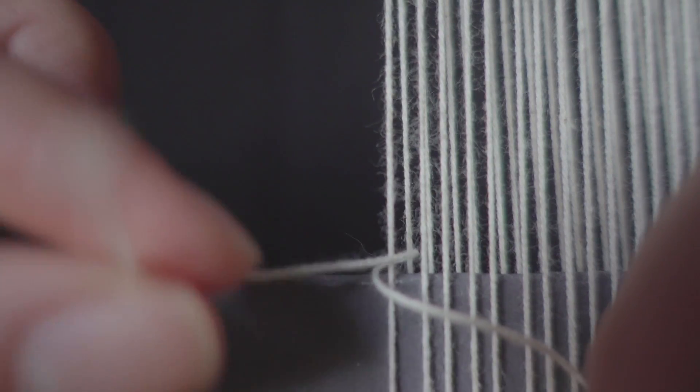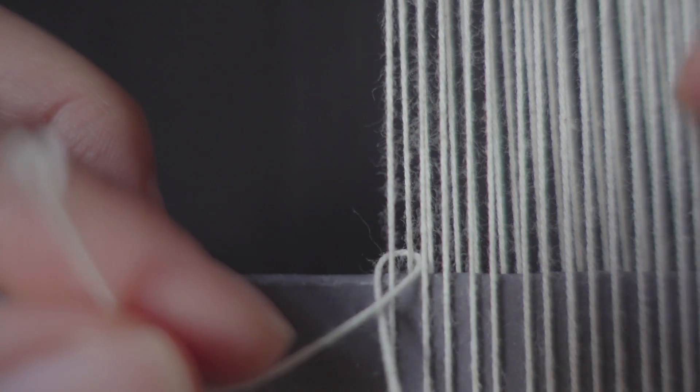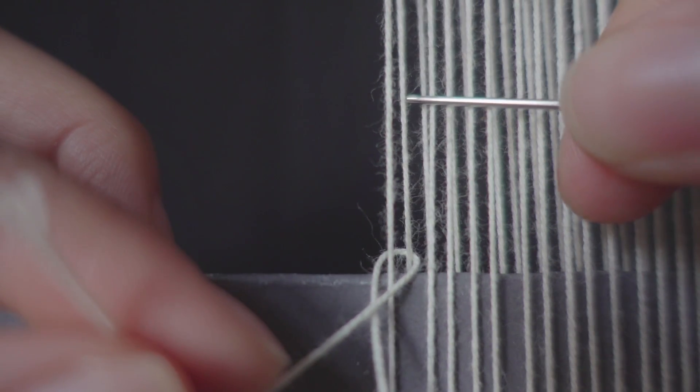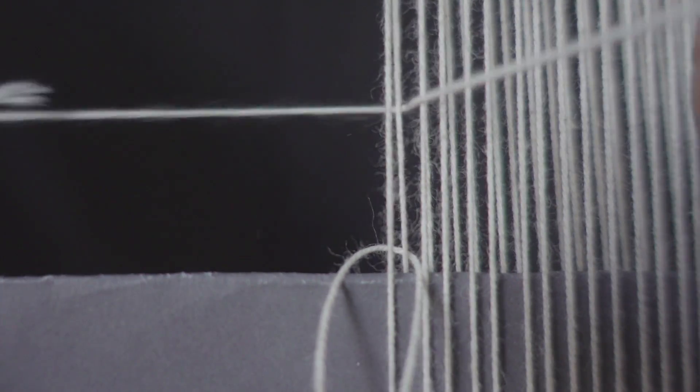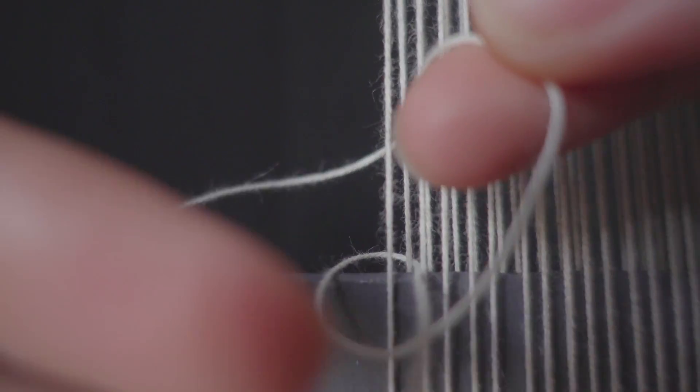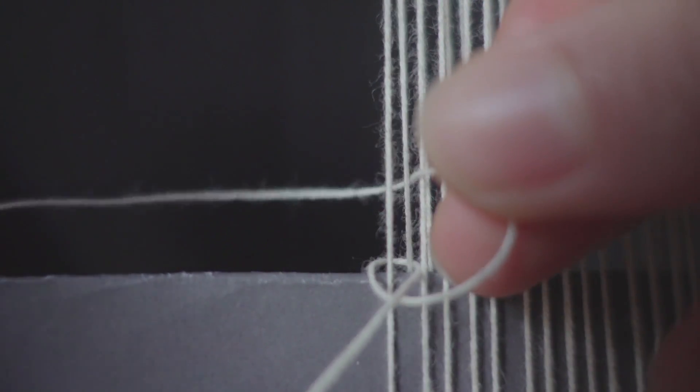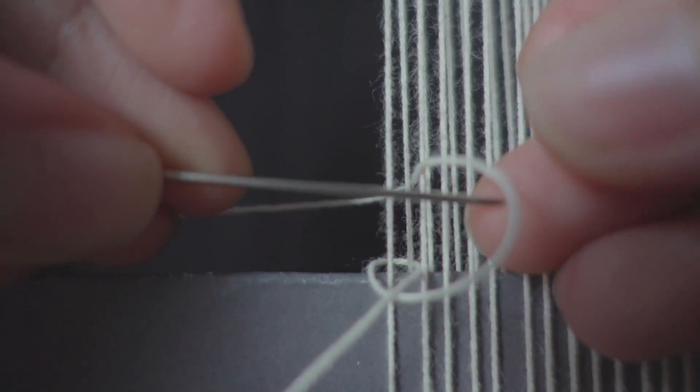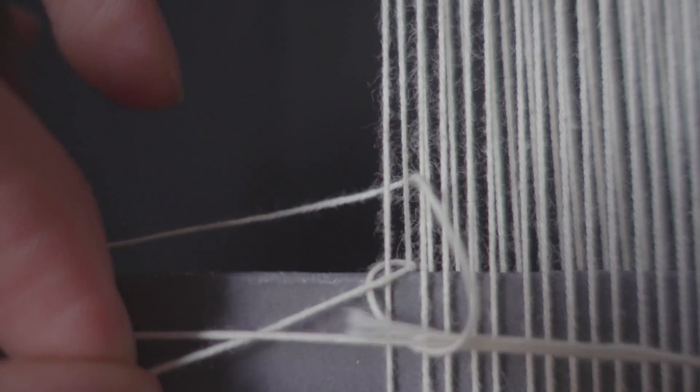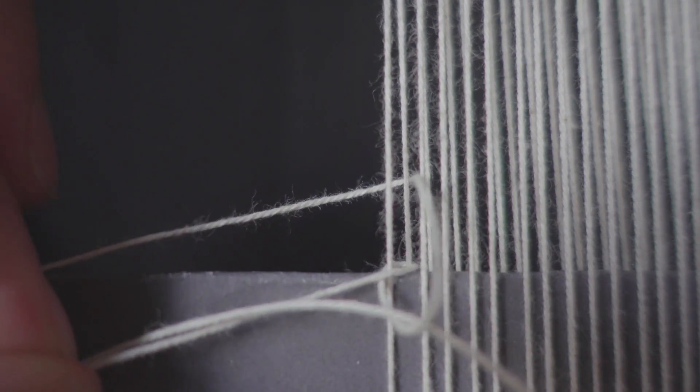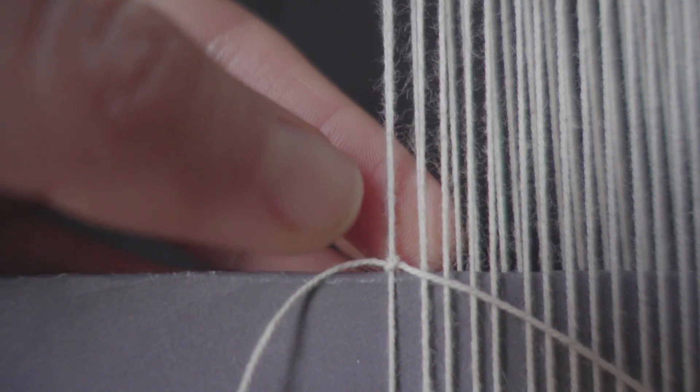We are gonna cross in this way and then just wrap around another time. Make a loop and go inside the loop with your needle. Here we go. We made our first clove hitch knot.